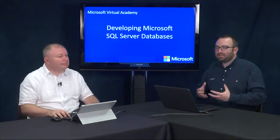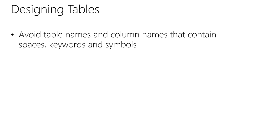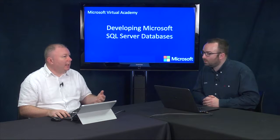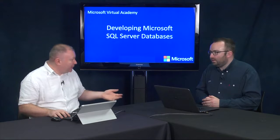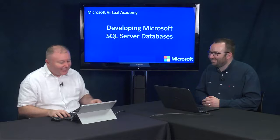The topic of designing tables could fill many days, so here are key discussion points. First, avoid table names and column names that contain spaces, keywords, and symbols. You can use them if you put them in square brackets, but as a best practice it's good to keep object names simple — for example, don't name a column 'date' or 'datetime', and avoid naming a table 'table'.